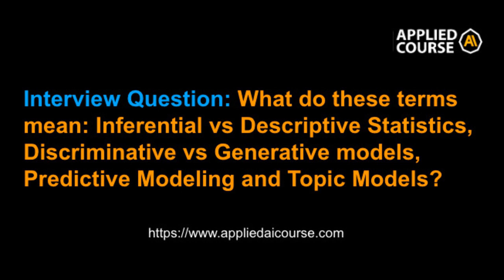I hope these definitions are clear now with these examples. All of us get confused with these terms. The way I understand them is by taking the key term: generative means I should be able to generate data, which requires knowing the distribution. Discriminative means to separate two things. Inferential means I want to infer some fact through null hypothesis and hypothesis testing. Descriptive means describing the data. Topic modeling means finding topics in the data. And predictive modeling is a business term about making future predictions by building models. Simple definitions — nothing fancy.